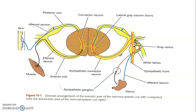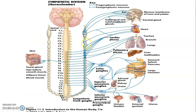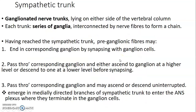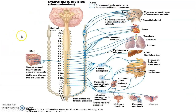From T1 to L2, the cell bodies in the lateral horn follow the ventral roots, then through the white rami communicantes get to the sympathetic trunk, from which postganglionic fibers reach the target organs. The sympathetic trunk contains ganglionated nerve trunks that lie on either side of the vertebral column — right and left. Each trunk consists of a series of ganglia interconnected by nerve fibers, forming a chain.